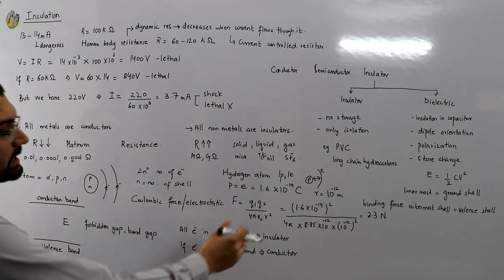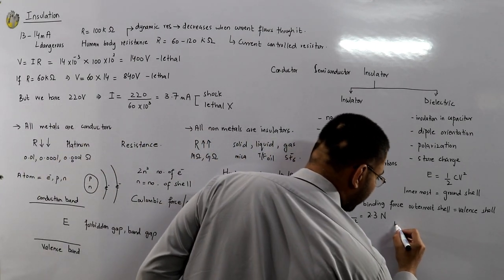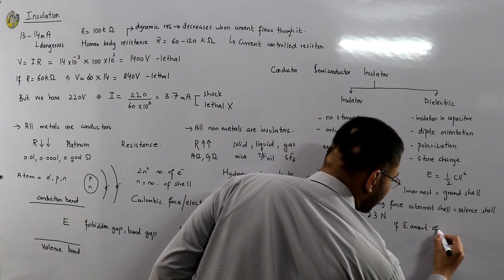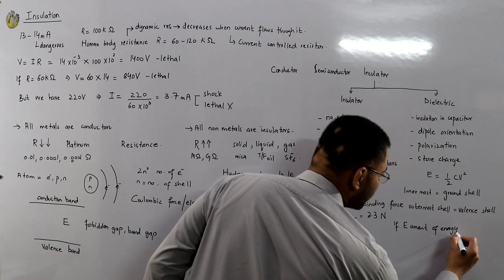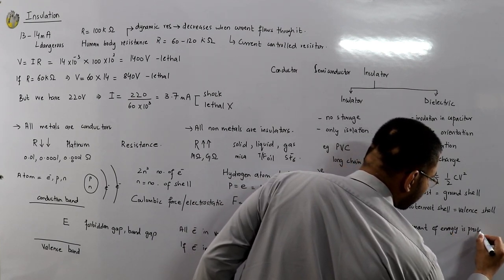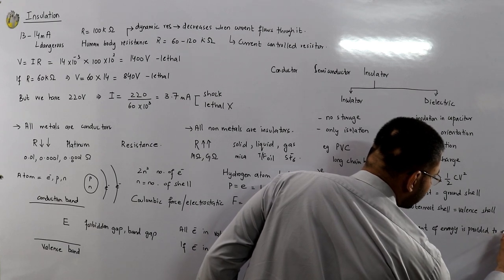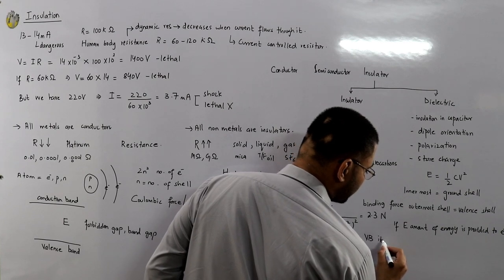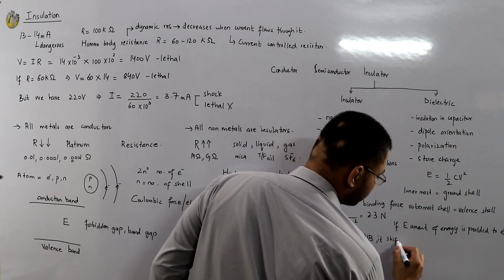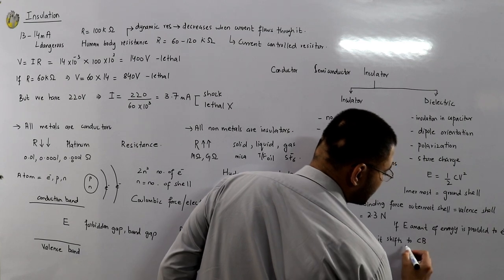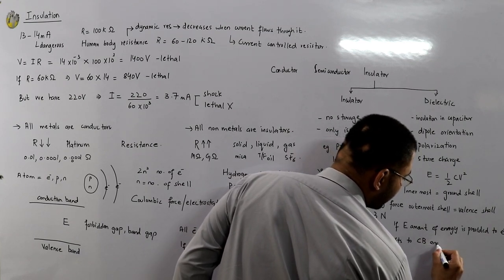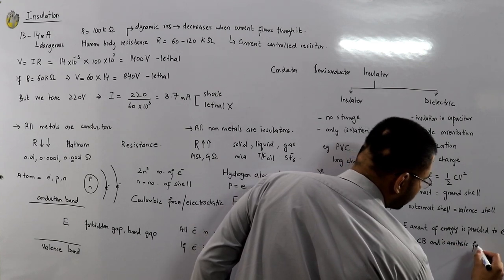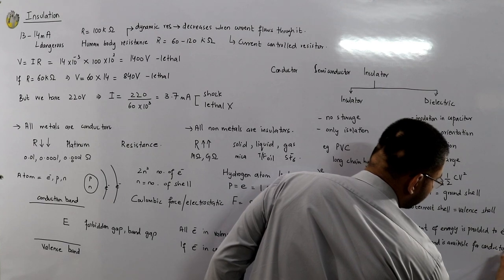So if E amount of energy is provided to an electron in the valence band (VB), it shifts to the conduction band (CB) and is available for conduction — the material is now acting as a conductor.